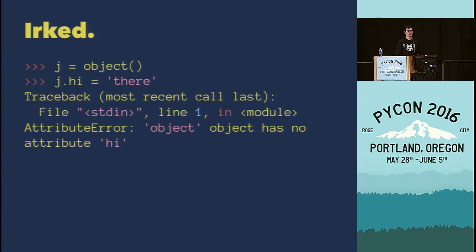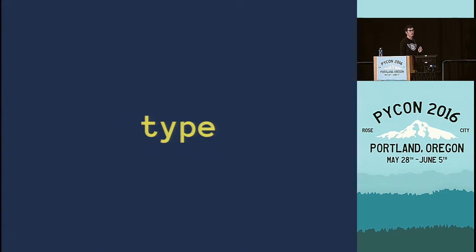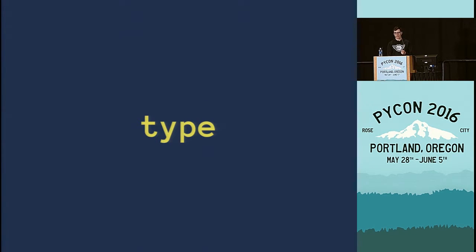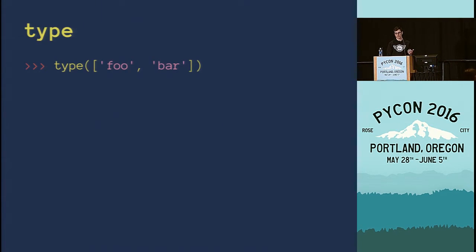I'm about to tell you, but first let's talk for a little bit about type. The type built-in in Python can be used as a function that tells us what something is. You can pass it just about anything as its first argument, and the return value is a type object. So let's have a little quiz with some examples of how type is used — please shout out the answers if you know them.